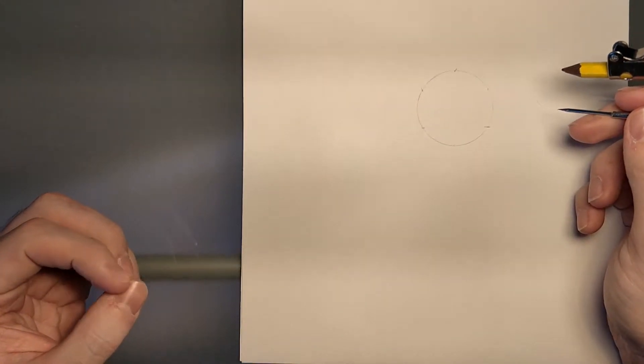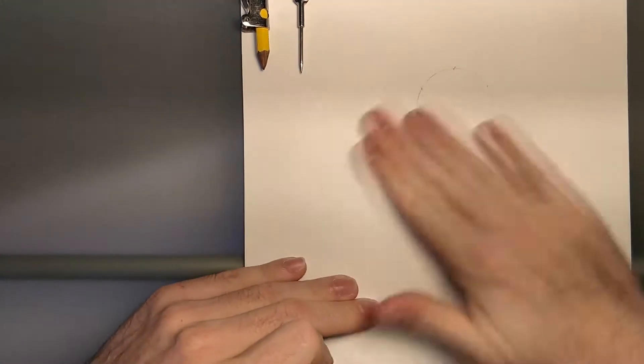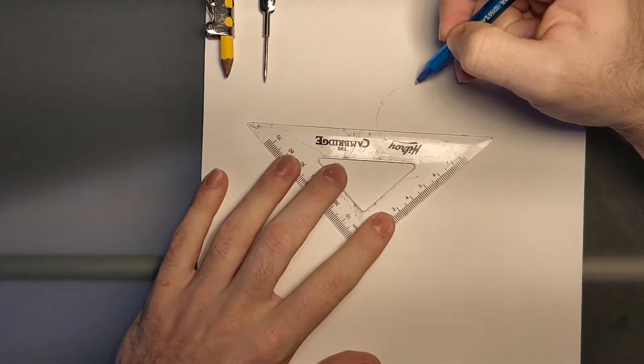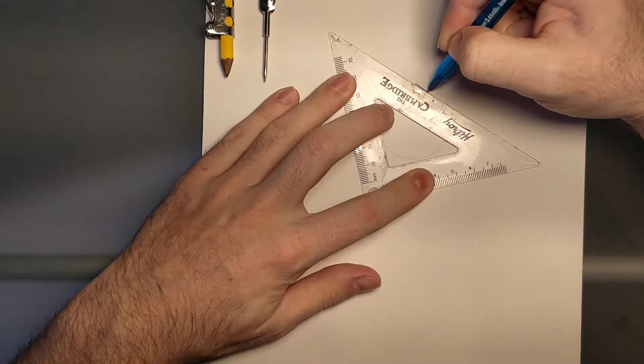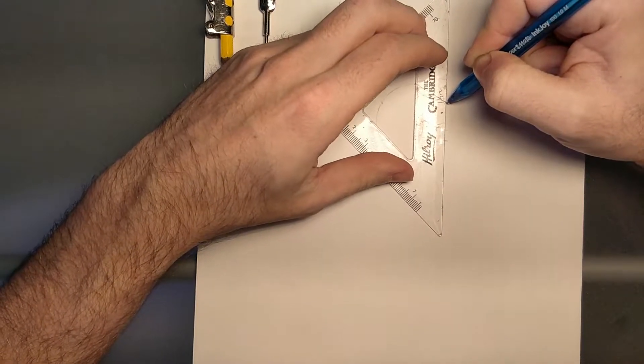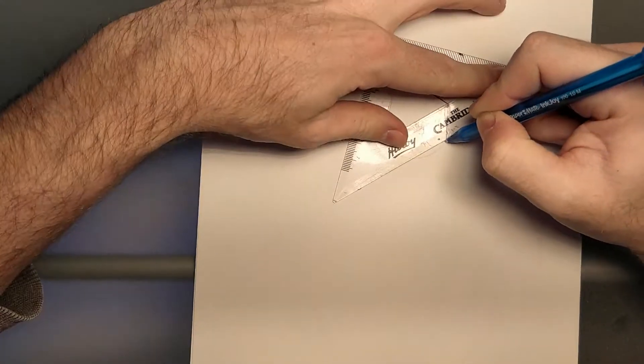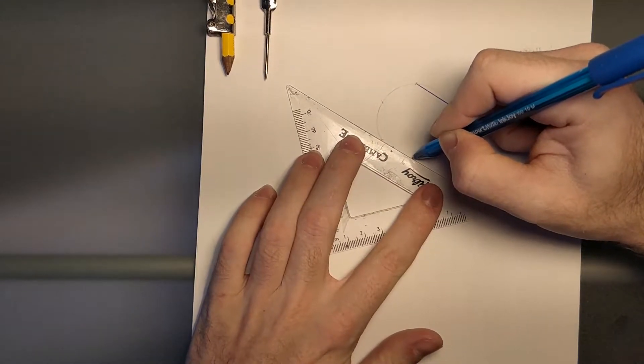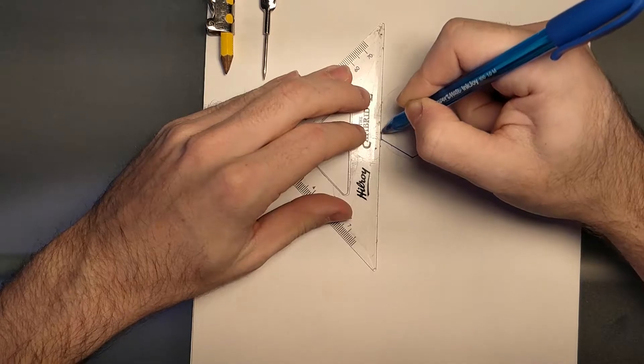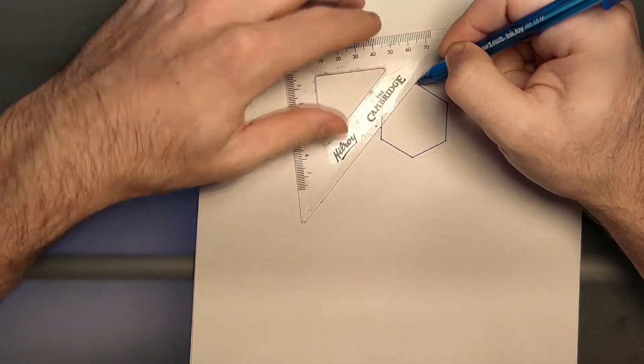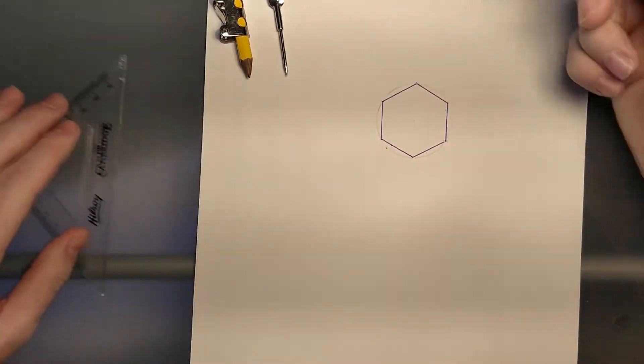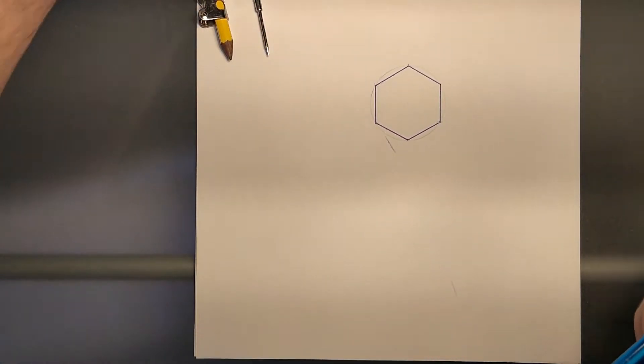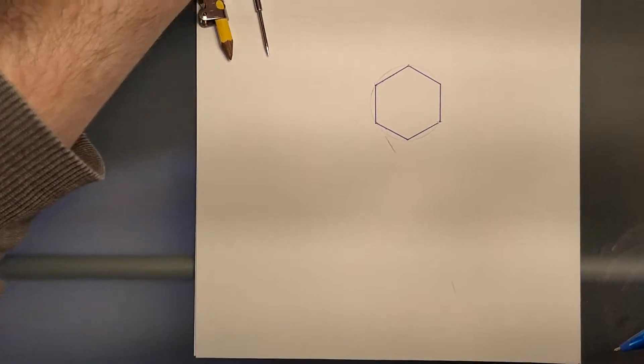Once we have all those points set, we can go ahead and draw our first hexagon. This is how all of our hexagons from here on out will be drawn. I just take a pen and go between the two lines. Just like that, we have our first hexagon set.